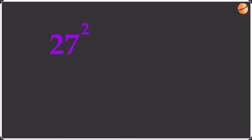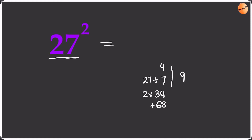Now 27 squared, doing it faster. Square the unit: 7 squared is 49, write the 9, take the 4 as a remainder. Difference: 27 minus 20 is 7. Add to original: 27 plus 7 is 34. Times by 2: 68. Add the remainder 4: 72. Bring the 9 over — the answer is 729.